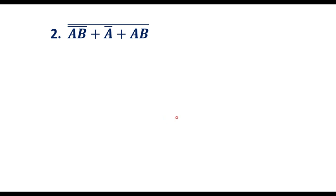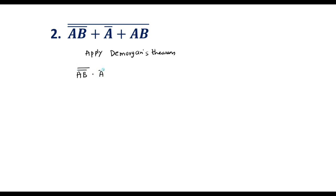Now let me consider the second example. Here we have ab̄ + (ā + ab)̄. I will apply De Morgan's theorem here — this entire term is a single term. Applying De Morgan's theorem, I can write ab̄ bar as (ab̄)̄, ā bar as a, and (ab)̄ as is.